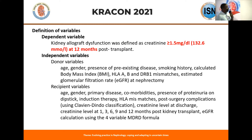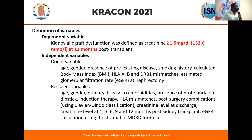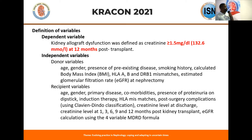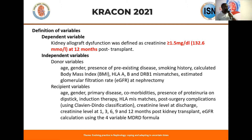The dependent variable was defined as kidney allograft dysfunction of serum creatinine greater than 1.5 mg/dL — equal to 132.6 mmol/L — at 12 months. Donor variables included age, gender, pre-existing disease, and smoking history. Recipient variables included age, gender, primary disease, HLA mismatches, induction therapy, drugs, surgical time, and post-surgical complications.